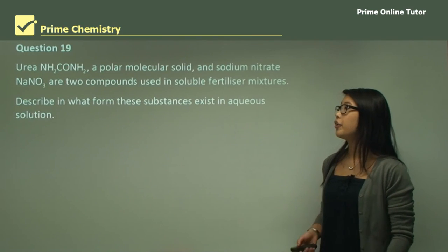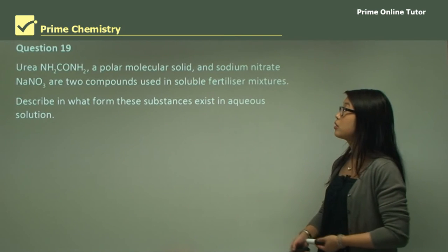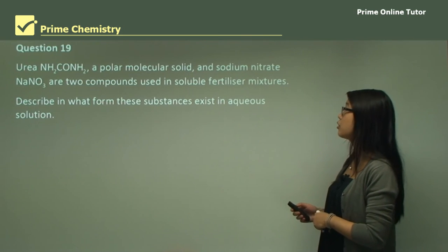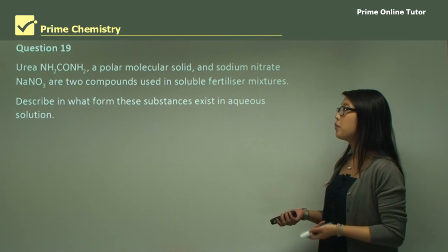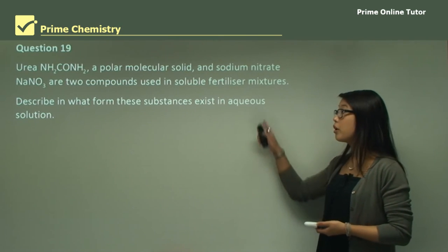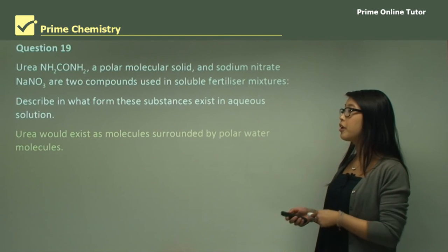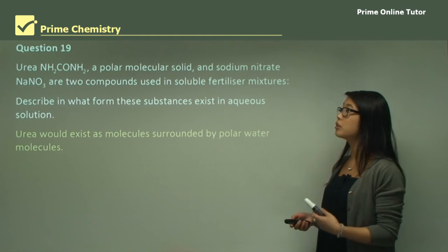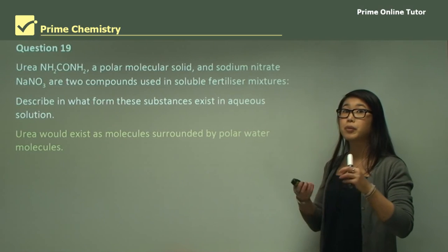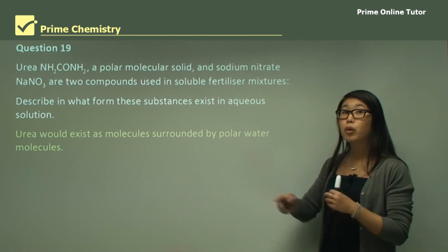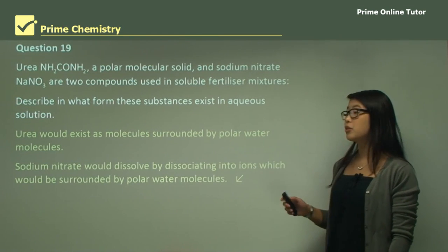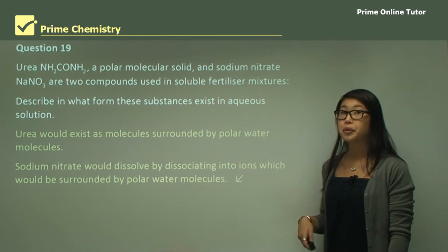Question 19: Urea NH2CONH2, a polar molecular solid, and sodium nitrate NaNO3 are two compounds used in soluble fertilizer mixtures. Describe in what form these substances exist in aqueous solution. Urea will exist as molecules surrounded by polar water molecules, because usually covalent bonds can't be broken when they're being dissolved. We can break up the whole crystal structure, separating molecules but not breaking up the molecules. Sodium nitrate will dissolve by dissociating into ions which will be surrounded by polar water molecules as well.